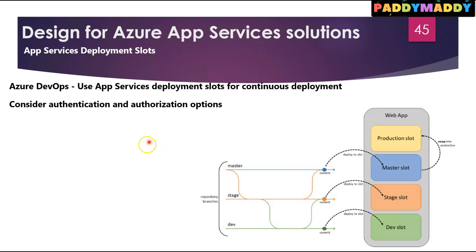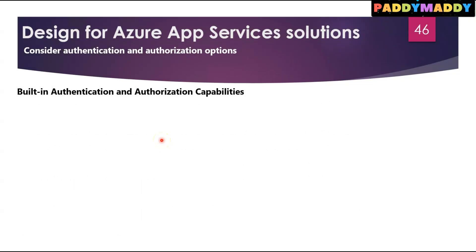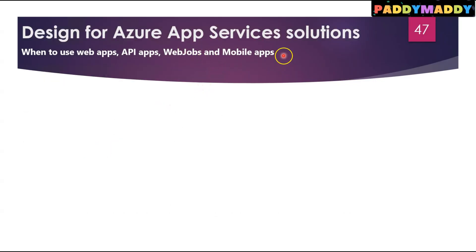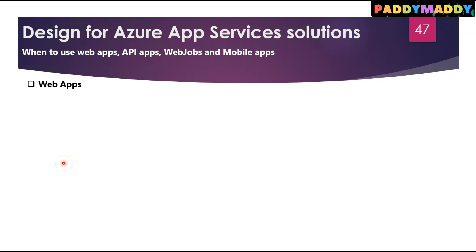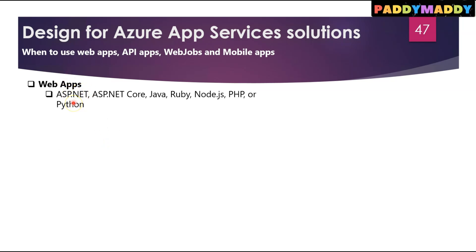Now let's look at when to consider different App Service types: web applications, APIs, web jobs, and mobile apps. Azure App Service is an HTTP-based service for building web applications, background jobs, mobile backends, and RESTful APIs. For web apps, you can choose either Windows or Linux, and it supports multiple languages including ASP.NET, ASP.NET Core, Java, Ruby, .NET, Node.js, PHP, and Python.